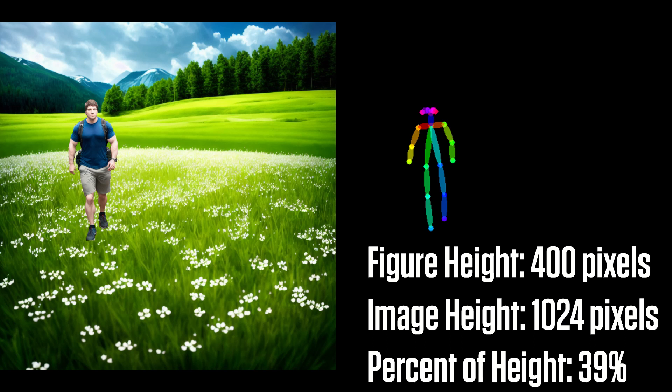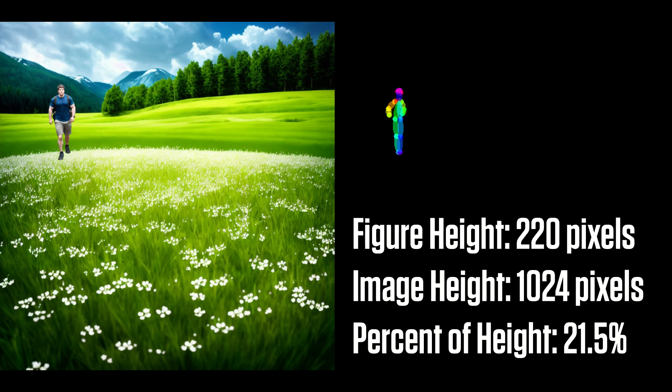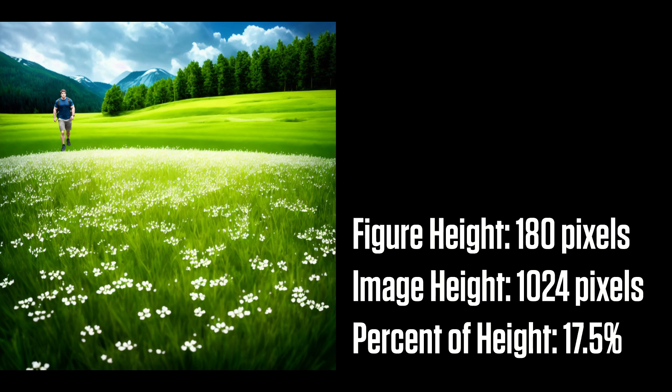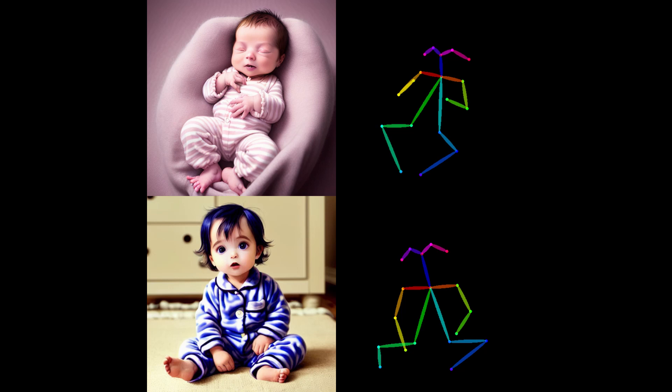Next, I wanted to figure out how small of a figure OpenPose could pick up — just kidding about taking a walk through a tranquil meadow. OpenPose continued to pick up the figure, but with somewhat degraded accuracy, until the figure was shrunk to 220 pixels, or a little bit over 20% of the total image height. I would guess that the 20% of image height is more important than the number of pixels. I was curious if OpenPose would have trouble with toddlers and babies, because their heads are much larger relative to their body and limbs compared to adults. Realistic depictions of both toddlers and babies worked fine, so you should have no problem detecting people of any age with OpenPose.